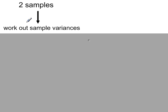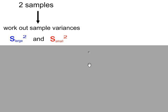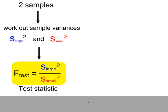From the two samples, we work out the sample variances. One variance will be larger than the other, so we label them accordingly: large sample variance and small sample variance. The test statistic is the large sample variance divided by the small sample variance, in this order. There's a reason for doing this, which I will come back to.